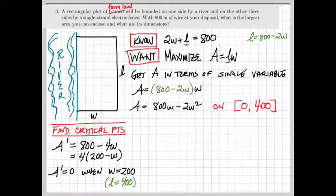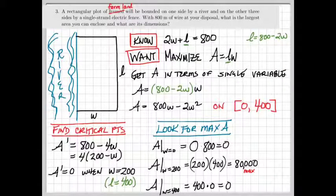Finally, test the critical points and endpoints to see which gives us the greatest enclosed area. When the width is 0, that means the length is 800, and 0 times 800 is 0, so we have not enclosed anything. When the width is 200, that means the length is 400, so we get 200 times 400, which gives us 80,000 meters squared. And when the width is 400, that means the length is 0, so the area would be 400 times 0, or 0 meters squared.